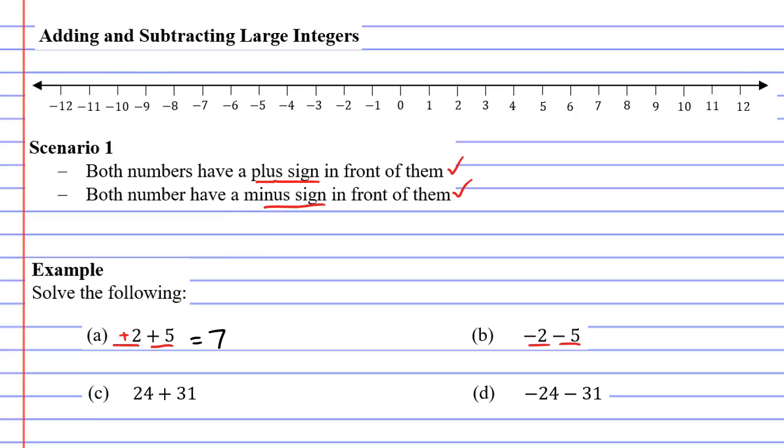But we need it for question B. So it tells us to start at negative two and to subtract five. Subtract meaning go to the left. One, two, three, four, five, landing on negative seven. So that equals negative seven.